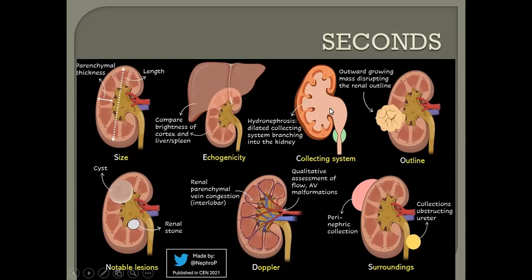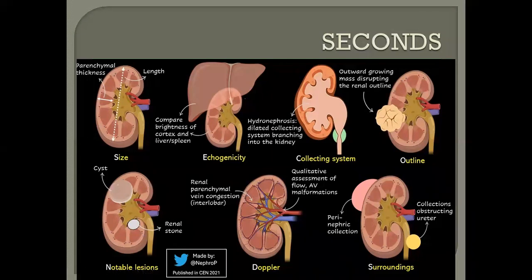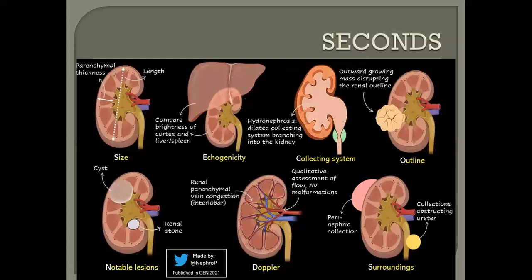C stands for the collecting system. Is there any hydronephrosis in the kidney? Is there any hydroureter? We also check for the outline and any notable lesions present on the kidney — they can either be a cyst, a calcification, or calculi. Then for Doppler, we need to see if the kidneys are well vascularized, check for thrombosis, adequate perfusion, and ischemia.